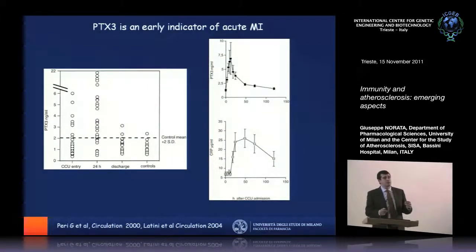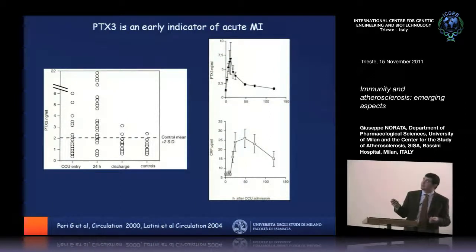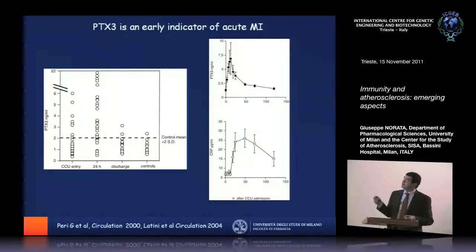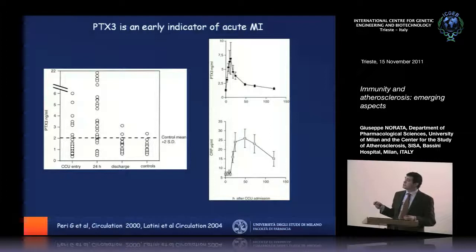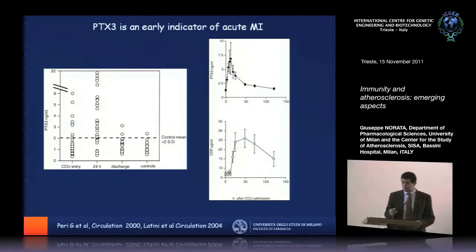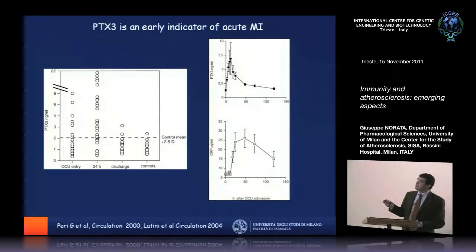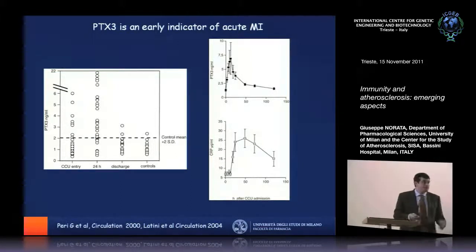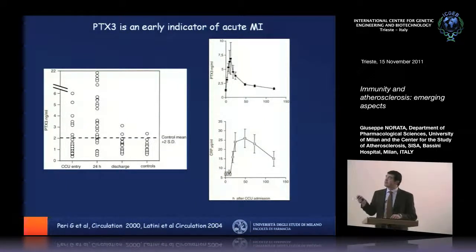Why could PTX3 be important in cardiovascular disorders? Several years ago it was published that plasma levels of PTX3 are rapidly increased following myocardial infarction. Comparing PTX3 versus CRP in patients admitted to a coronary unit following MI: PTX3 levels increase very rapidly, reaching a peak within a few hours, while CRP takes longer to start increasing and remains elevated for longer. PTX3 rapidly decreases, returning to near-basal levels around 50 hours. So there is a different behavior between PTX3 and CRP, despite both being acute phase proteins.